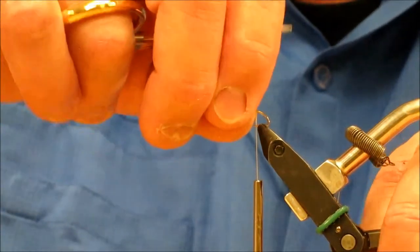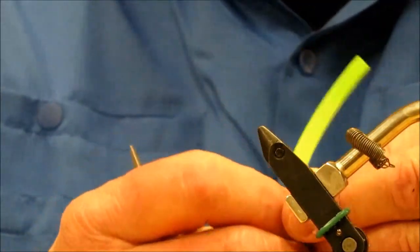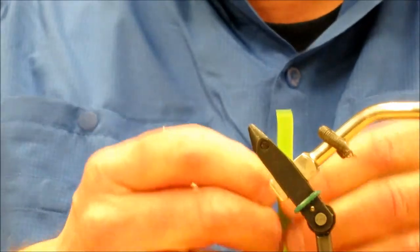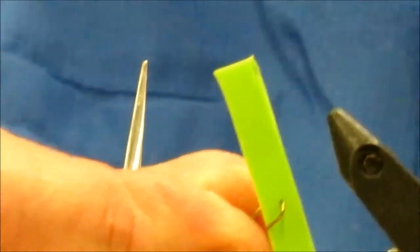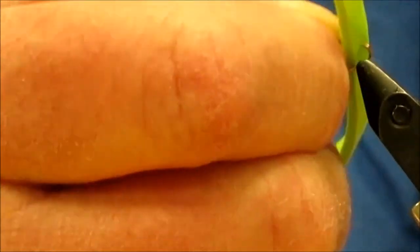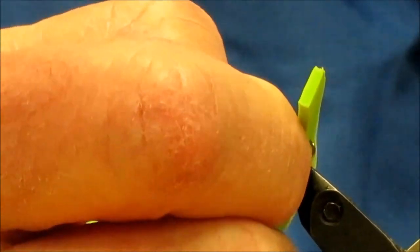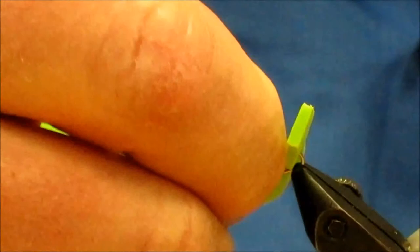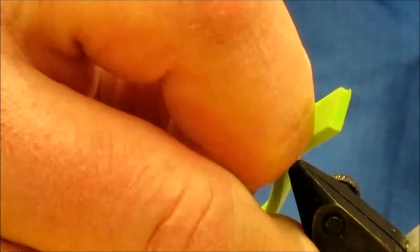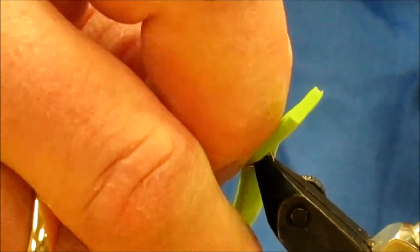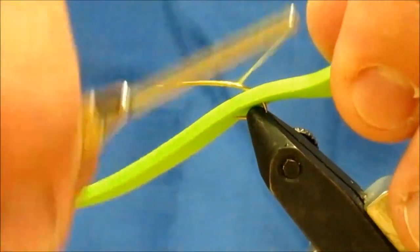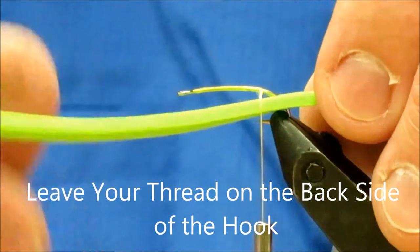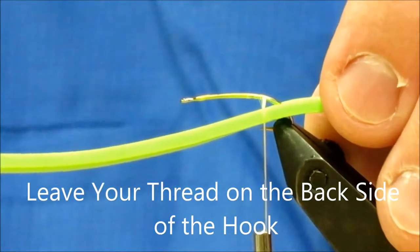So I put my foam on. Then I'm going to take my hook and put it in the middle of the foam, leaving about two thirds to a half an inch of foam on the back. Now you can put the foam on first if you want to. I find it a little awkward, so I try to do it this way. Then get it back in the hook. You want your thread on the back side like this.